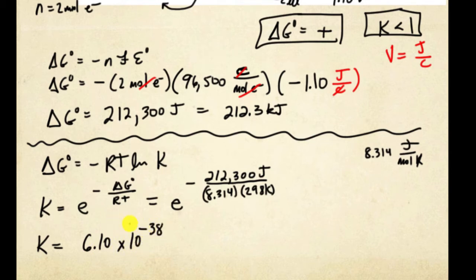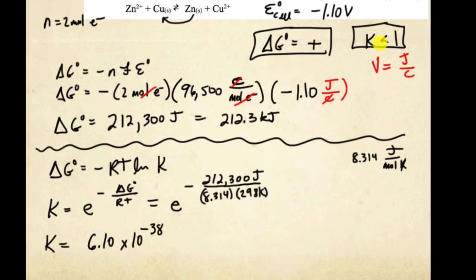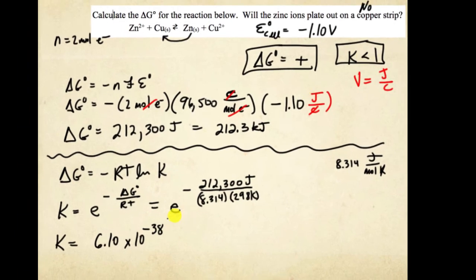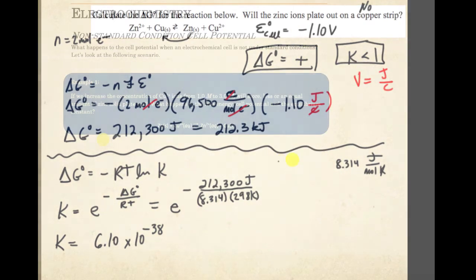As we said before, K should be less than 1, and this is extremely small — very small — therefore it again favors the reactants, not the products. Notice everything correlates together: negative cell potential tells us it's not spontaneous and not thermodynamically favorable; positive free energy; and a very small K value.